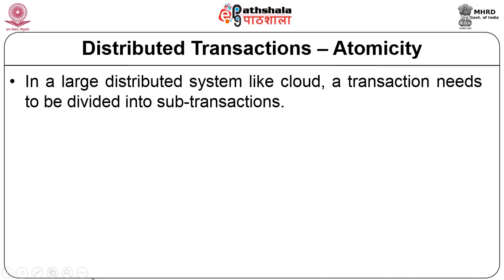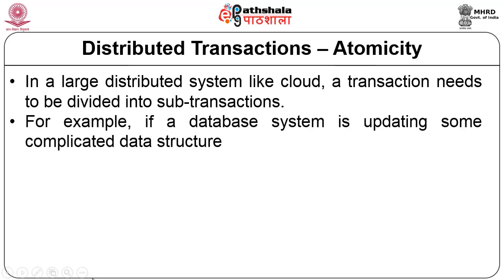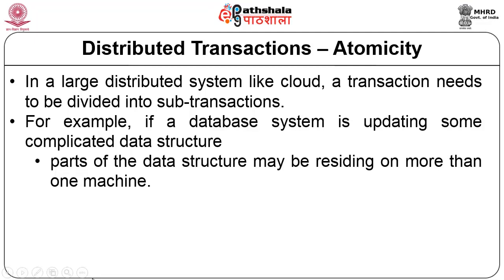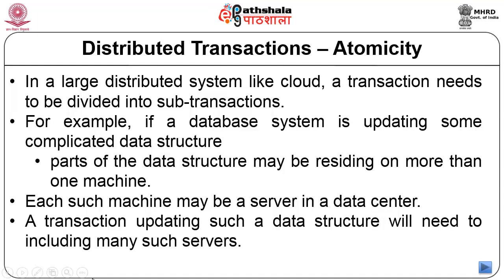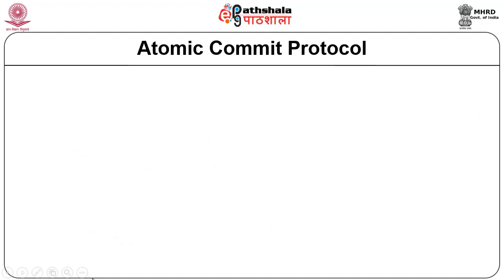What is atomicity? In a large distributed system like cloud, a transaction needs to be divided into smaller sub-transactions. As an example, consider a large data structure to be updated — different parts of this data structure will be residing on different servers, each such machine a server in the data center. These servers will be spread all over the place, and a transaction updating the whole data structure has to access various servers. A typical way of doing this is known as an atomic commit protocol.